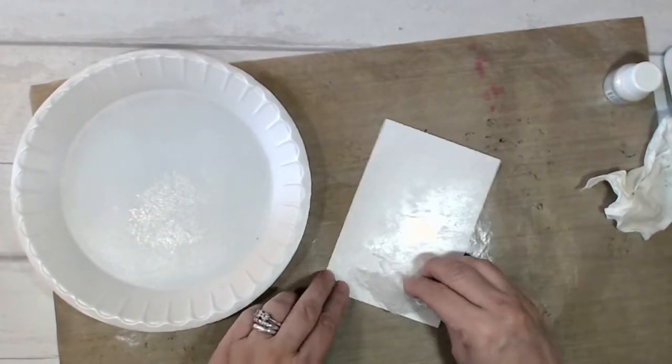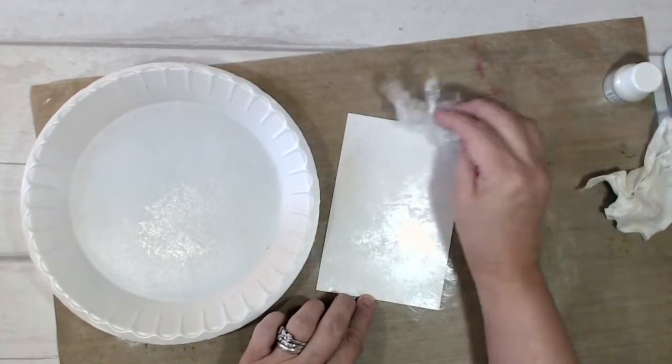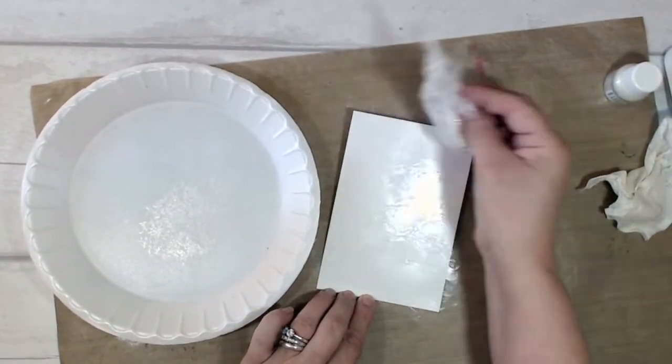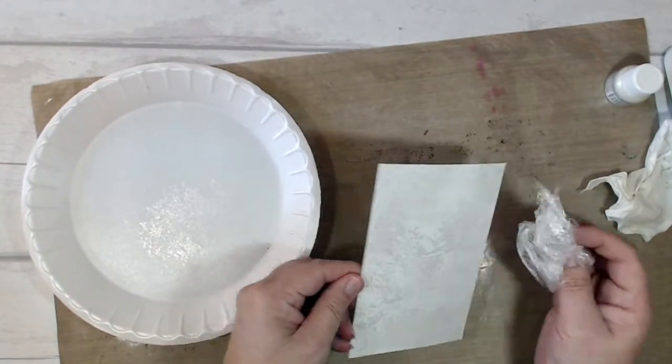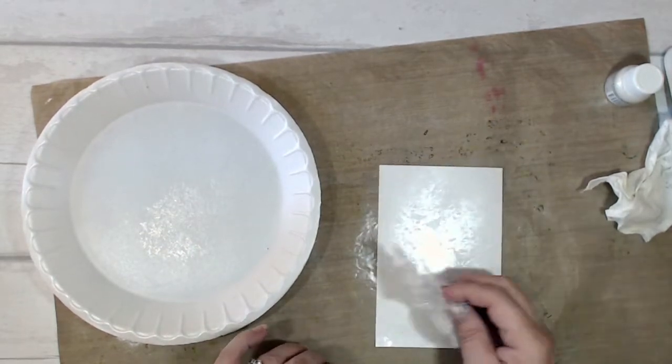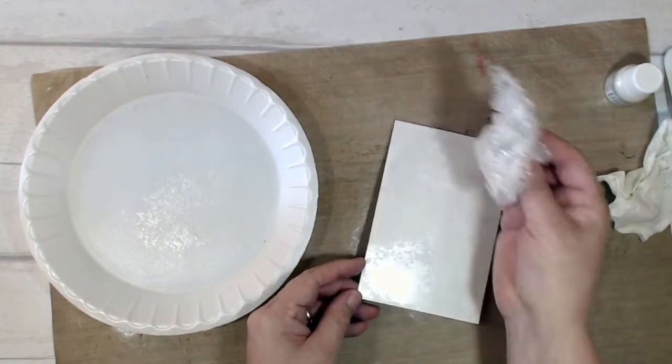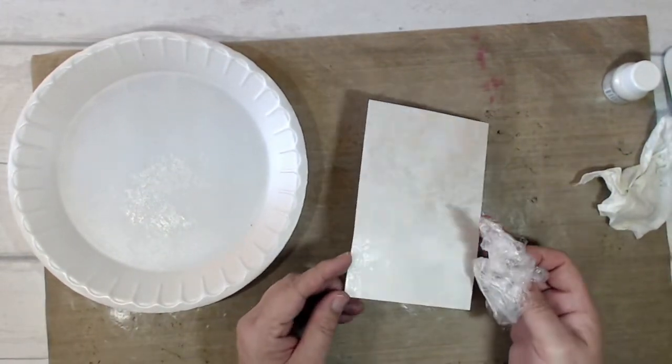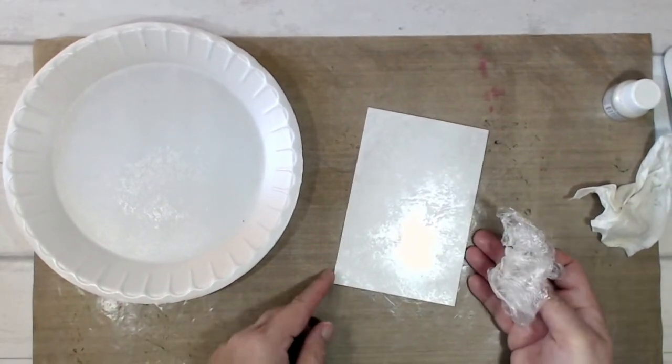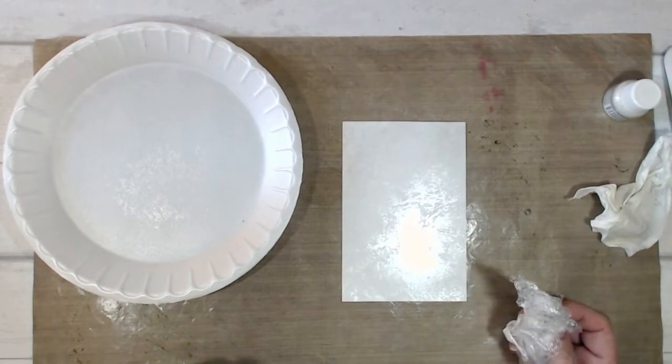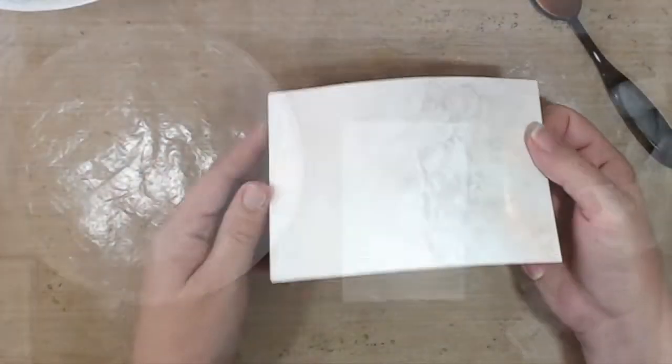Now I'm just going to dab that randomly all over the glossy white card. I'm just making sure I get a good coverage, but I don't want to completely obliterate the background. We used to do this kind of thing on the walls back in the day. This kind of look was very fashionable about twenty years ago. I'm going to give that a few minutes to dry properly, and then once it is, we can move on to the next step.